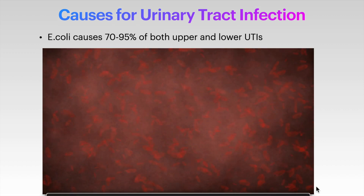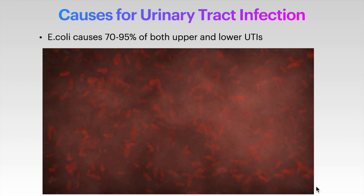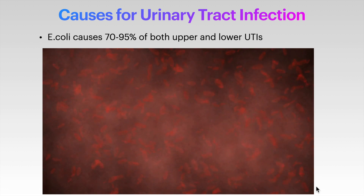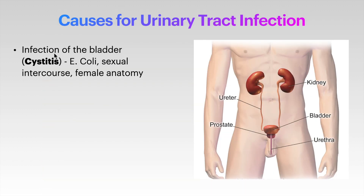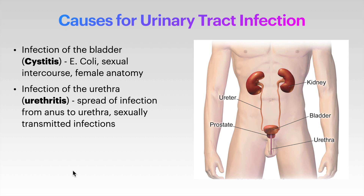E. coli causes 70 to 95 percent of both upper and lower urinary tract infections. Infection of the bladder — cystitis — can be caused by E. coli, sexual intercourse, or female anatomy due to the shorter urethra. Infection of the urethra, urethritis, is usually caused by spread of infection from the anus or by sexually transmitted infections like chlamydia, gonorrhea, or mycoplasma.